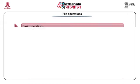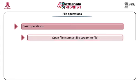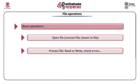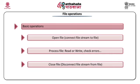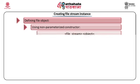The basic file operations include creating the file stream, opening the file — that means connecting the file stream to the physical file — processing the file by reading data from it and writing data into it, checking input-output errors during the operations, and finally closing the file. The processing operations are very similar to using operations with standard streams. Let us now look at creating the file stream object.